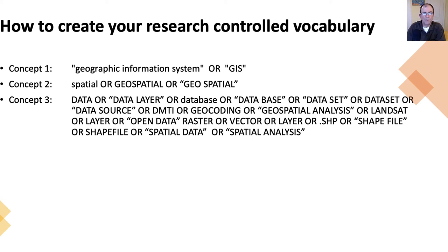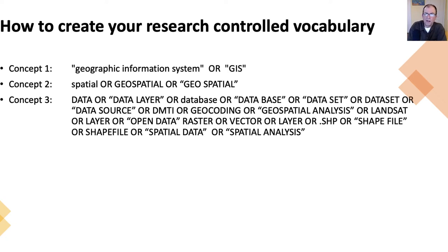First of all, you have the concept of spatiality, which really comes down to three main terms: spatial, geospatial, or geo-spatial with a space in between the two words. And then the concept of data — that's a tricky one because you've got data, but when you're talking about datasets, you've got data layers, databases, all kinds of different iterations there.